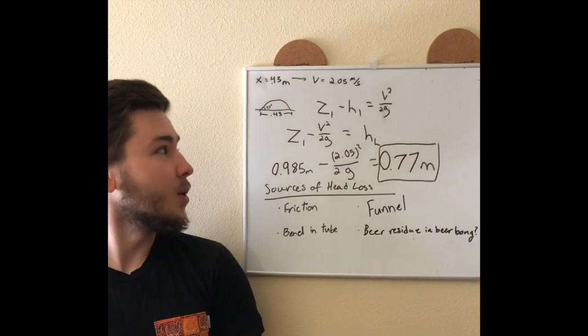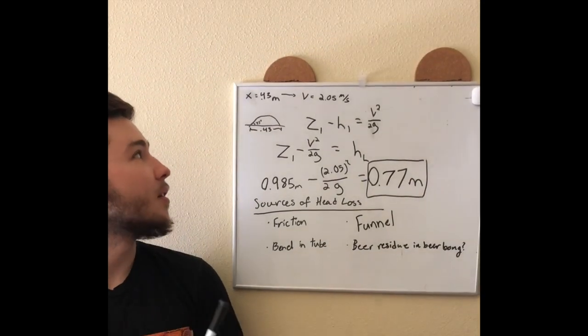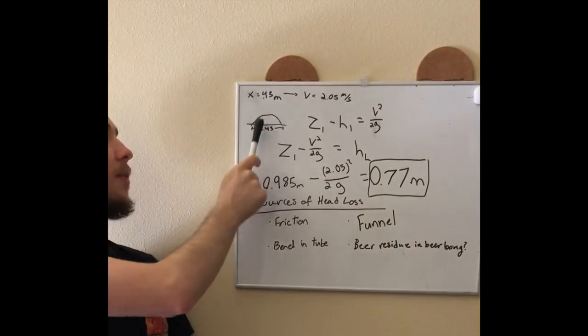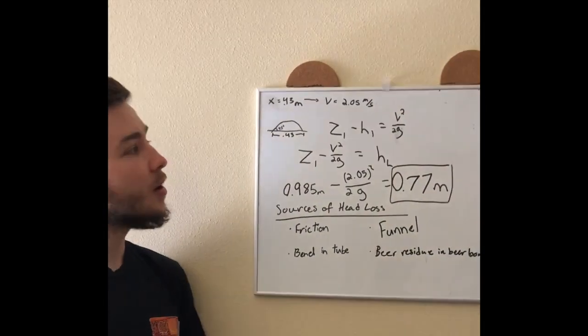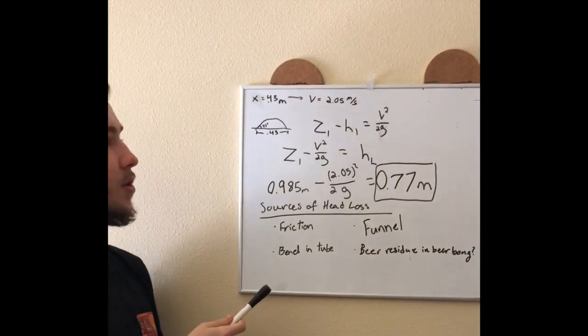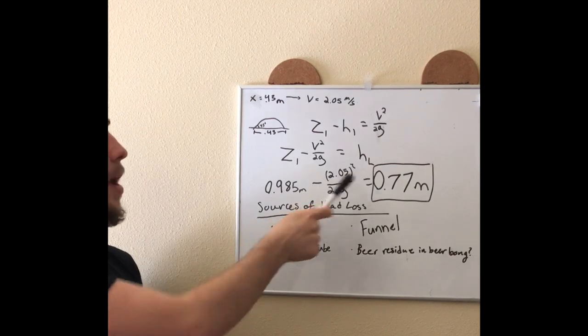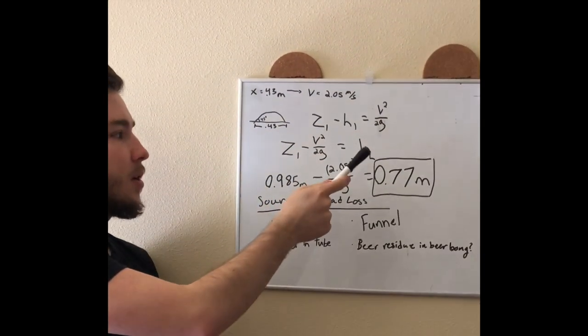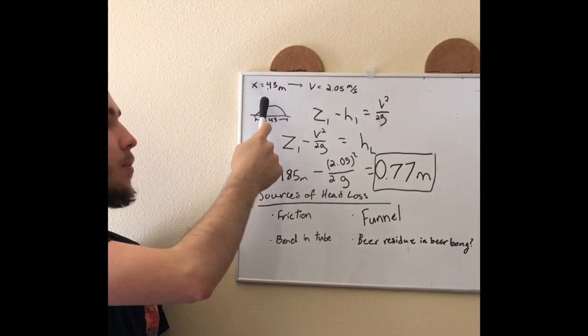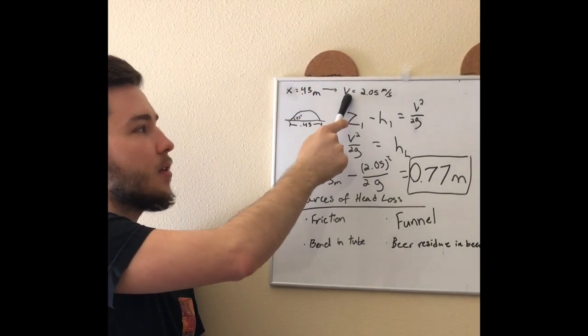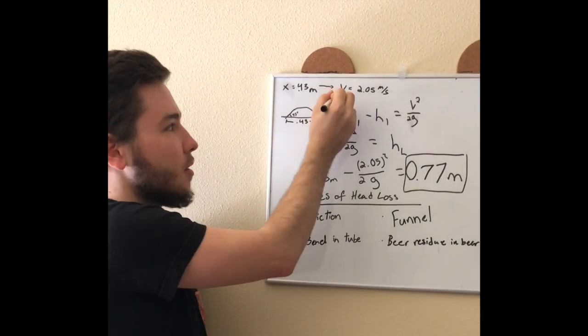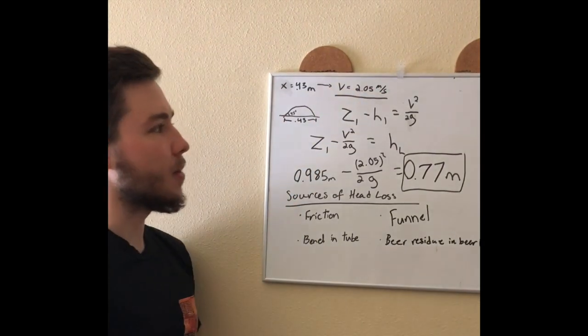After our experiment we found that the water jet traveled a horizontal distance of 0.43 meters. From that we can use Bernoulli's equation again, this time adding in the head loss. Because from the 0.43 meters we can calculate the output velocity, which we found to be 2.05 meters per second.